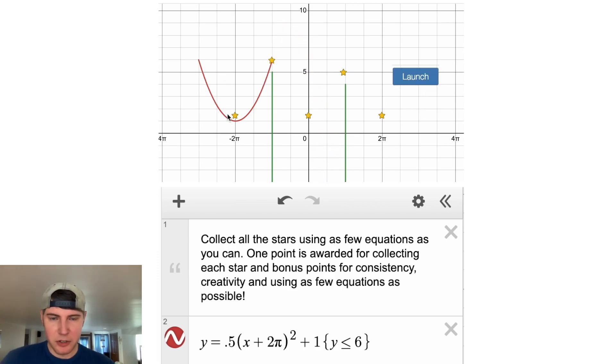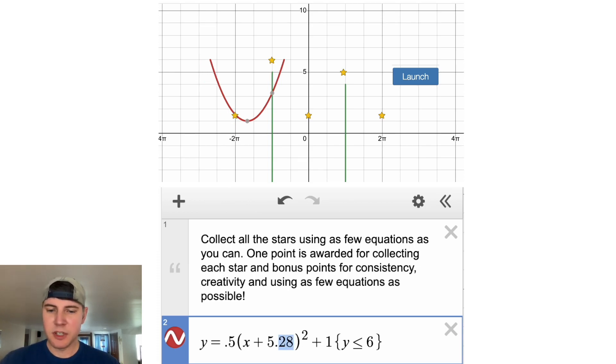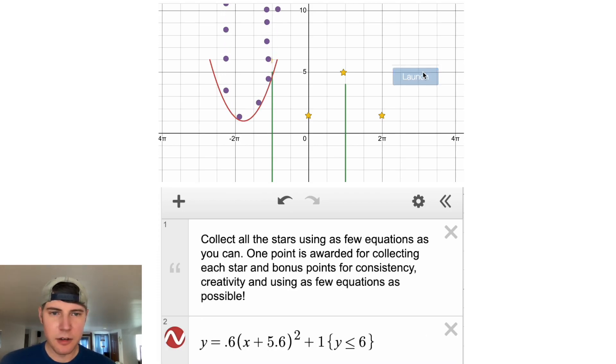So I think the problem is the balls are hitting too close right here. Let's scoot this over a little bit. So 2 pi is like 6.28. So let's try 5.6. That's going to keep hitting there. So let's make it a little bit steeper, 0.6. See what happens there. Keeps hitting it.